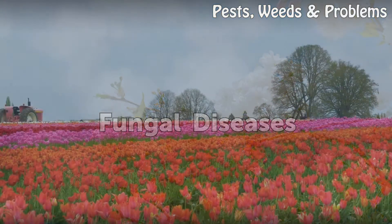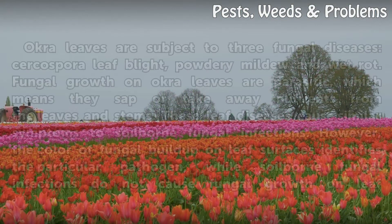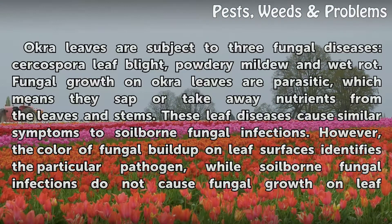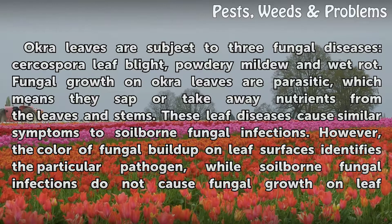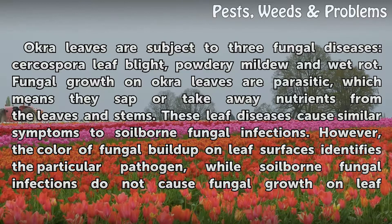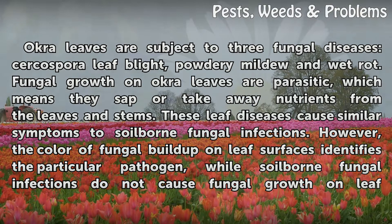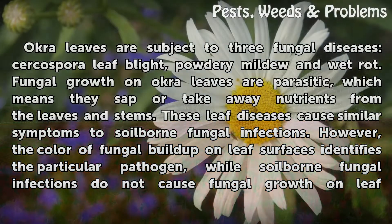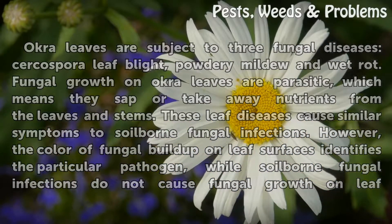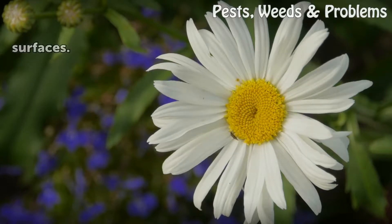Fungal Diseases. Okra leaves are subject to three fungal diseases: Cercospora leaf blight, powdery mildew, and wet rot. Fungal growth on okra leaves is parasitic, which means they sap or take away nutrients from the leaves and stems. These leaf diseases cause similar symptoms to soil-borne fungal infections. However, the color of fungal build-up on leaf surfaces identifies the particular pathogen, while soil-borne fungal infections do not cause fungal growth on leaf surfaces.